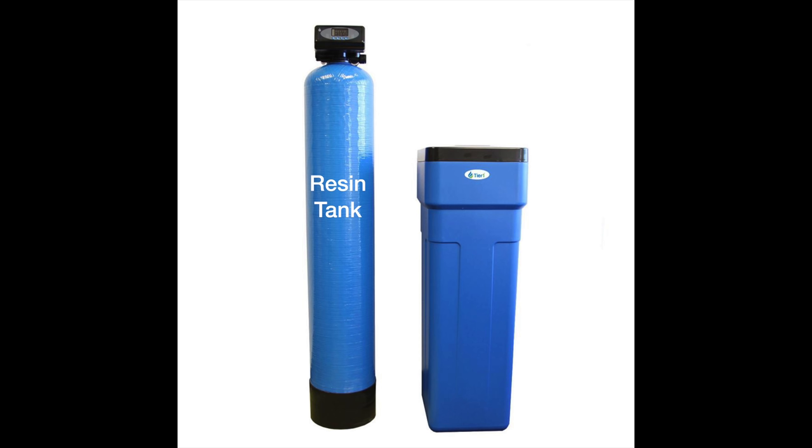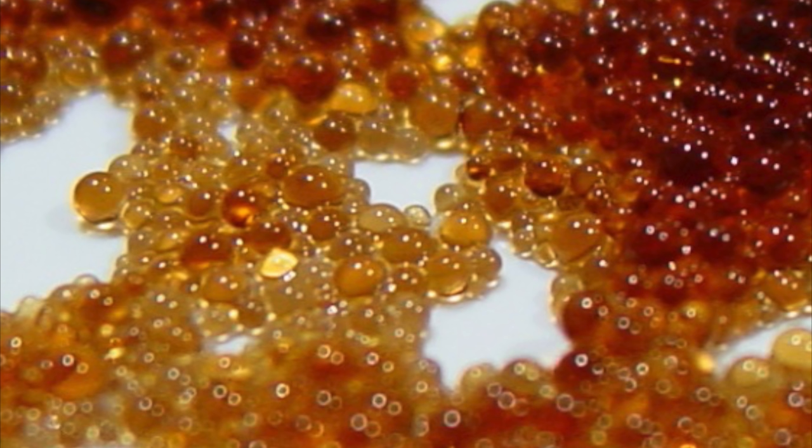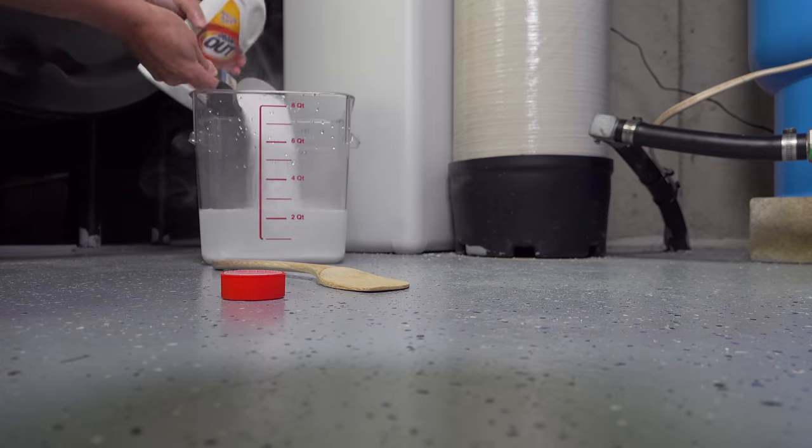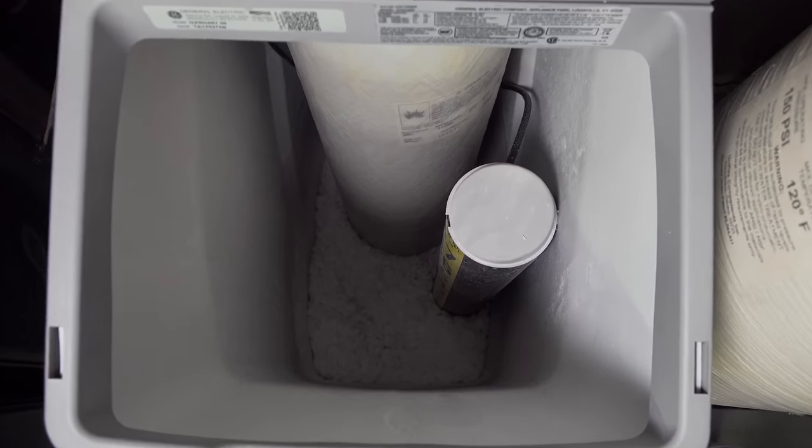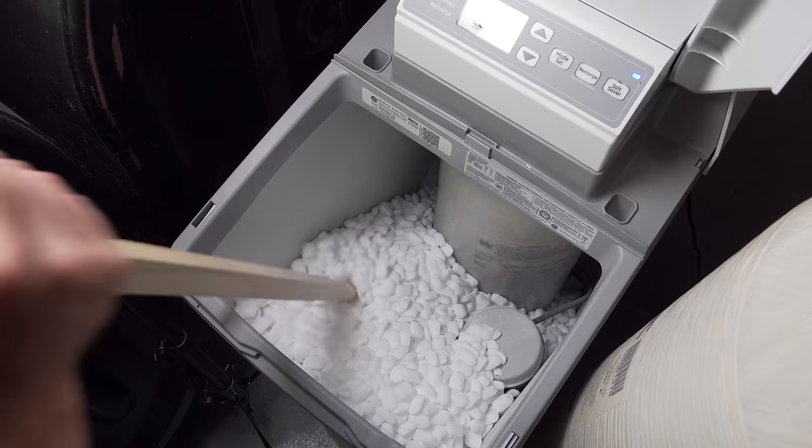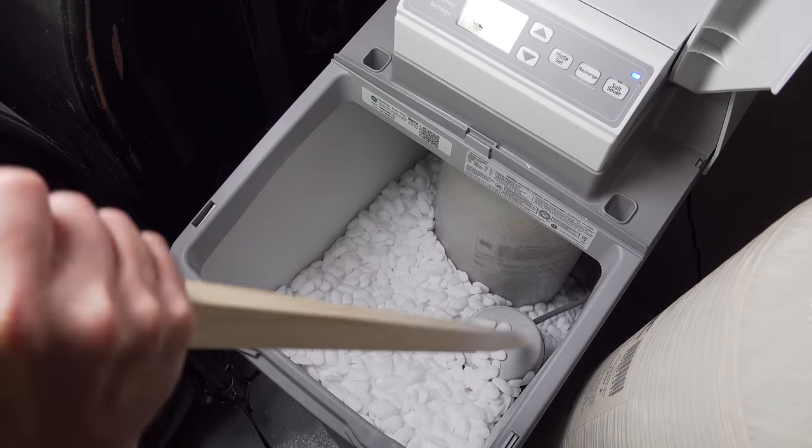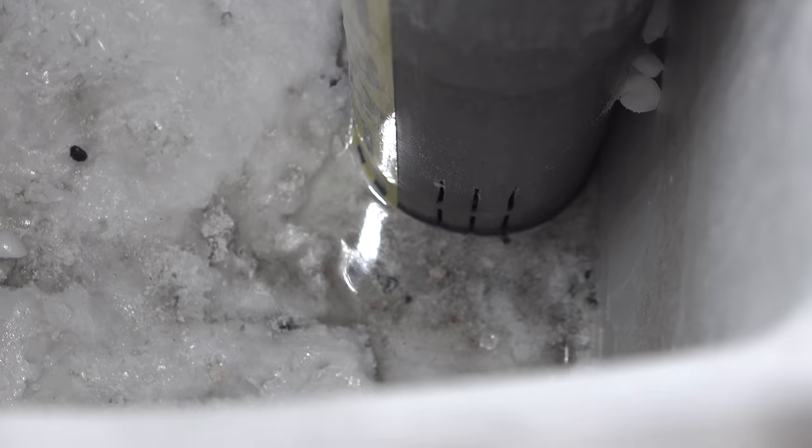Water softeners fail due to two problems. The resin inside the tank can go bad, and last year I showed you how to clean these resin beads that are actually inside the system using an inexpensive chemical that makes them like new. But the even more common problem is the salt reservoir itself. This thing can get filled with dirt and debris over the years that clog up the intake drains, and once this happens, your softener will no longer work. So I'm going to show you how to make this like new yourself.